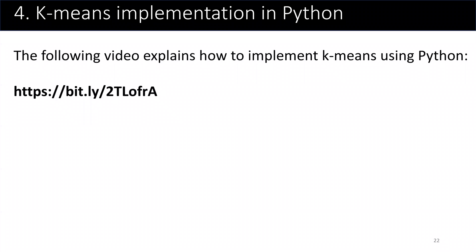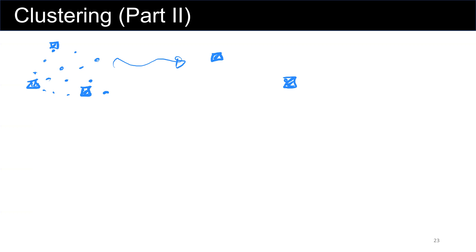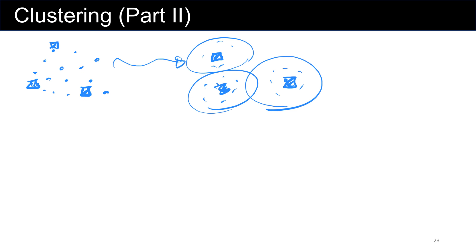There is also a video on how to implement k-means using Python — if you're interested in using k-means for your research or for future courses, you can watch that video. The purpose of this lecture was to show you how linear structures can be useful in k-means. In this lecture, we talked about a pictorial example of k-means — we choose some random centroids, and then over iterations these random centroids evolve to cluster our data into distinct groups. Then we provided a numerical example for the k-means algorithm.